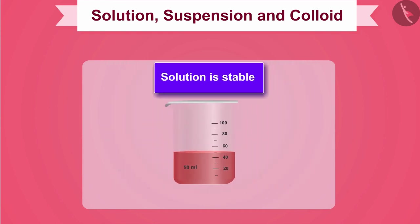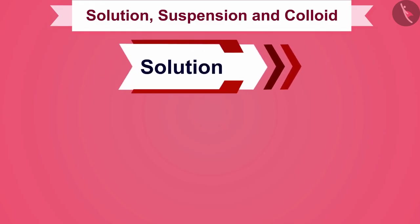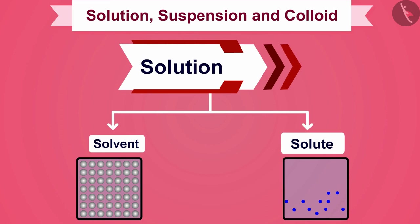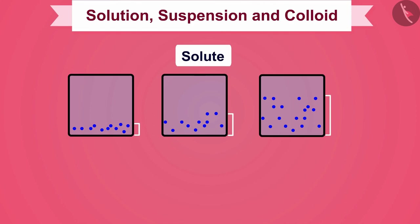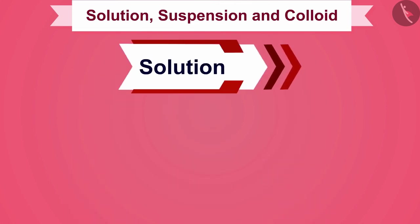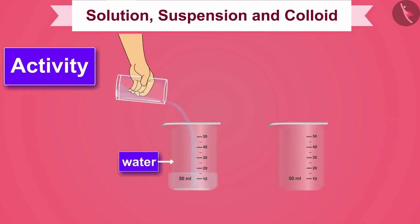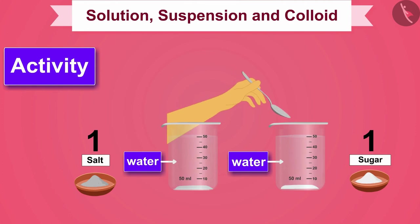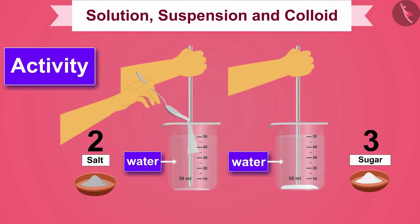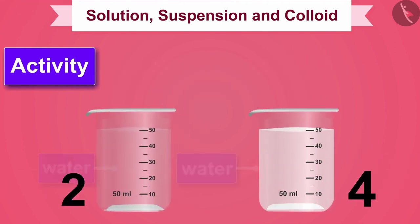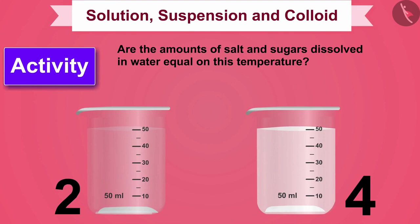That means the solution is stable. The solution contains different amounts of solvent and solute. Depending on the amount of solute present, it can be called a diluted, concentrated, or saturated solution. Take 50 ml of water in two separate beakers; mix salt in one and sugar in another. Keep dissolving until you cannot dissolve any more salt or sugar. The amounts of salt and sugar dissolved in water at the same temperature are not equal.